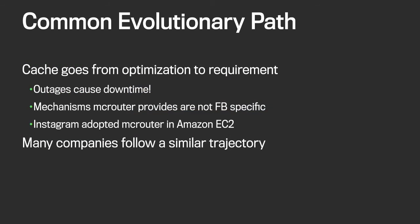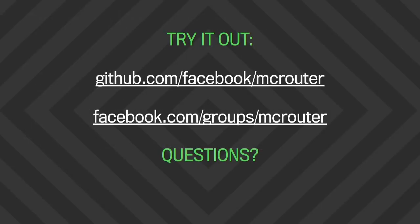The evolutionary path of caches — going from an optimization on the site to becoming a production requirement — is something you'll see in many sites. Outages of the cache can cause downtime, so it's important that we handle them well. The mechanisms MacRouter provides are not Facebook-specific, as Instagram adopted MacRouter on Amazon EC2 last year, and many companies will follow a similar trajectory. I invite you to try out MacRouter for yourself — we have detailed instructions on how to set it up on our GitHub Wiki.